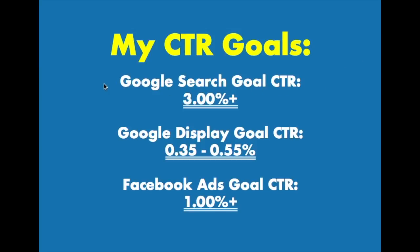For my click-through rate goals, this is generally a minimum for search and Facebook ads. For Google Display, I don't focus on click-through rate that much — I really just focus on my conversion rate there because it can really vary. I try to look for 0.35% to 0.55% because it shows people are seeing your ad and interacting with it. If you're above 0.35%, that means you're above average, which generally helps with your quality scores on the display network as well.